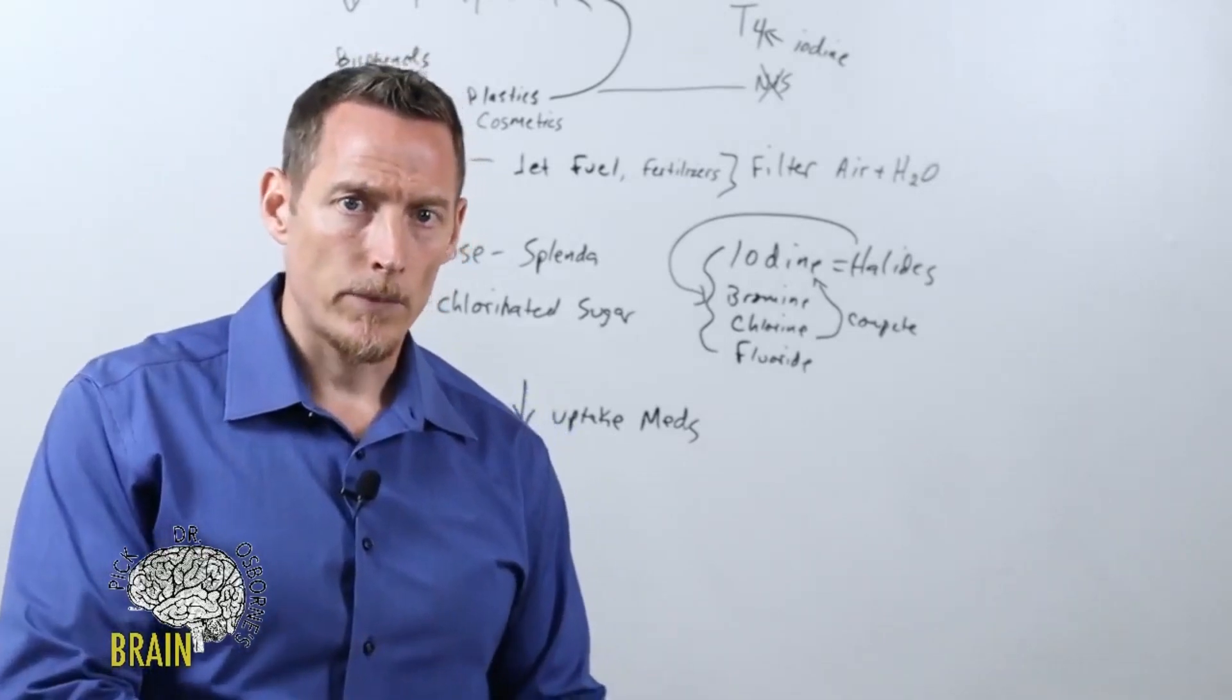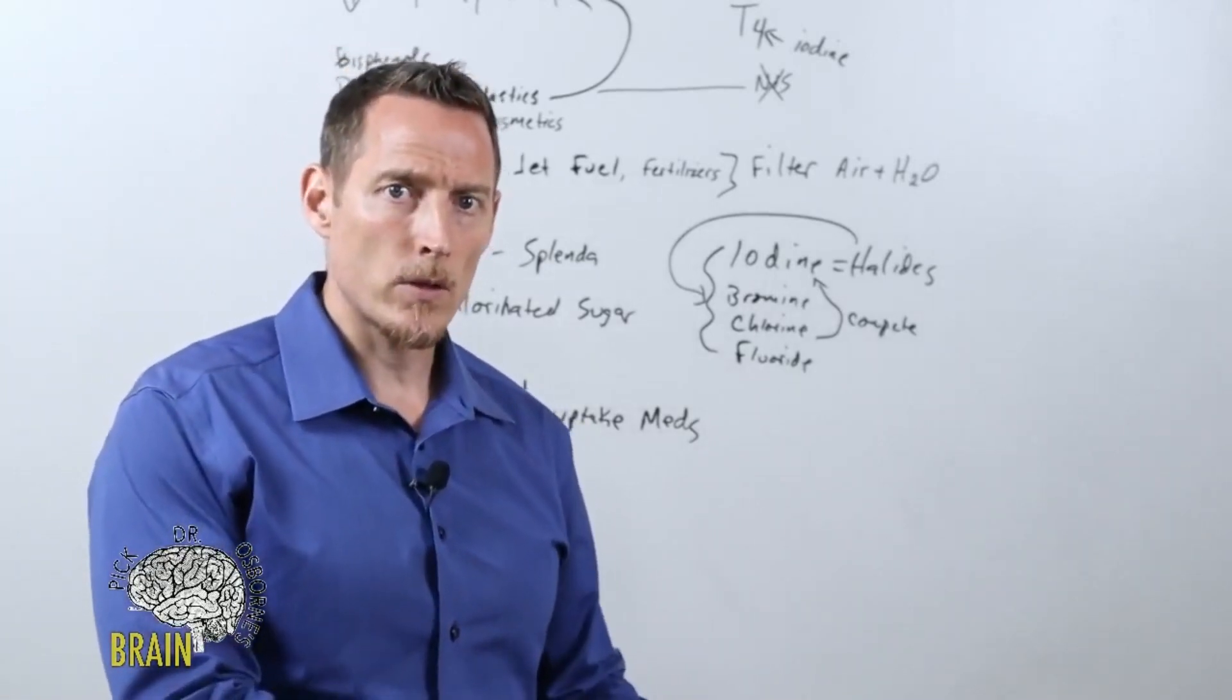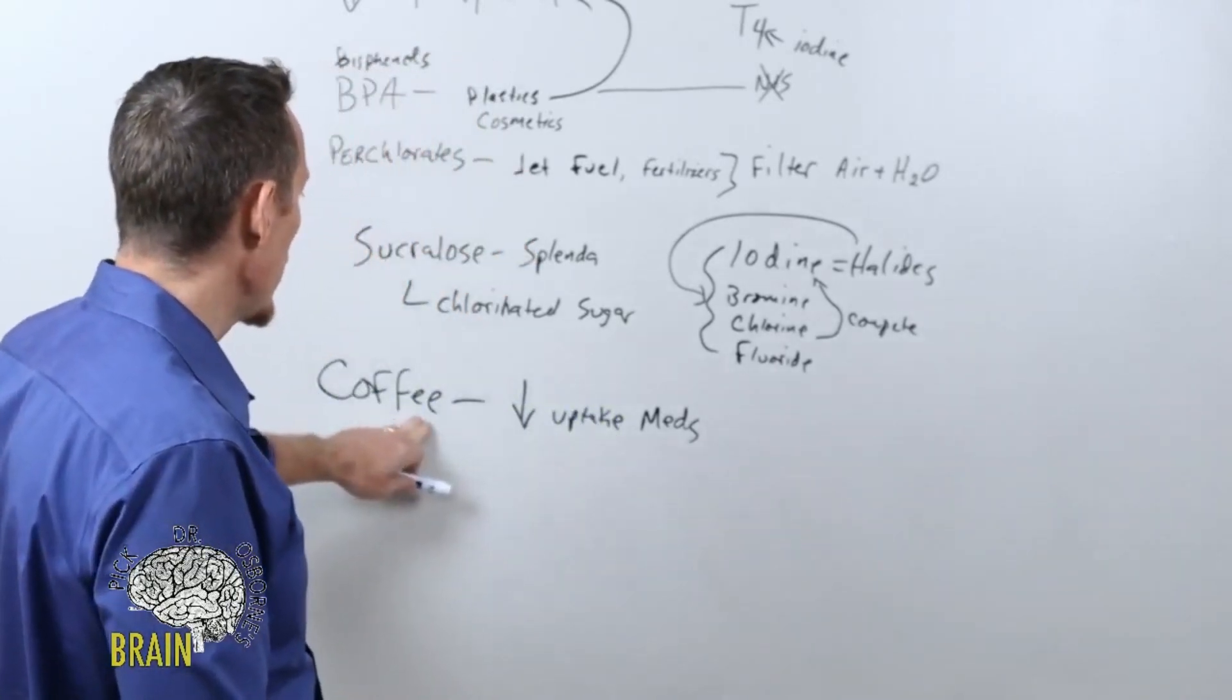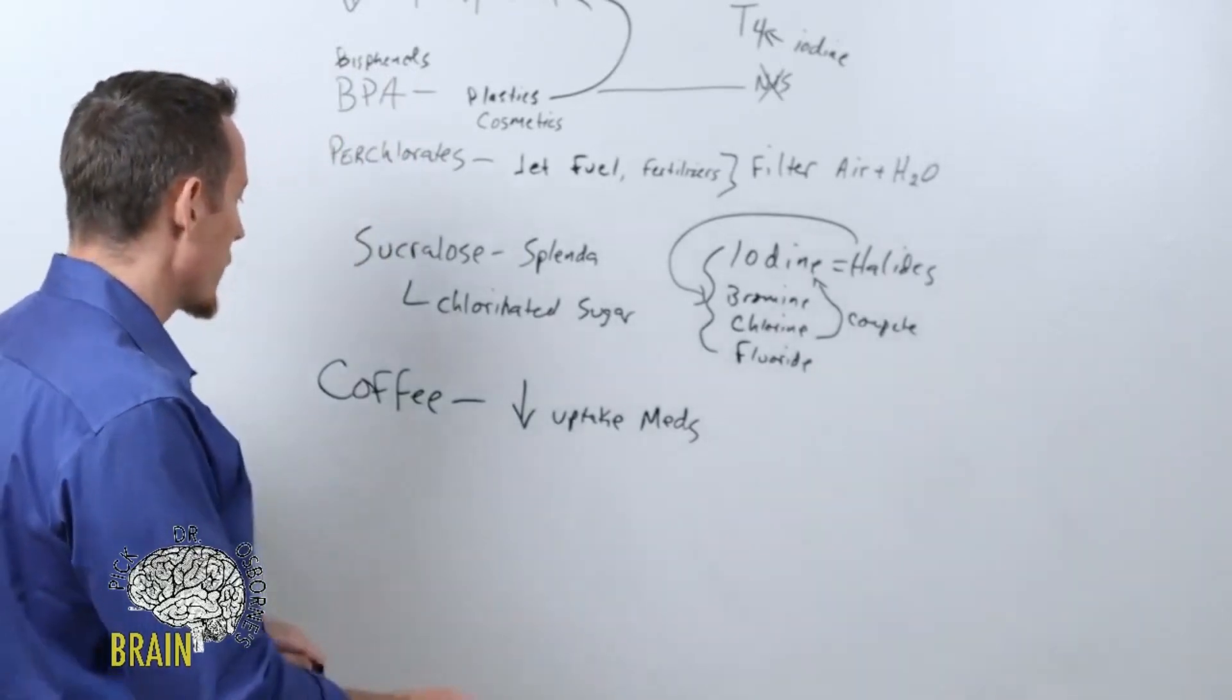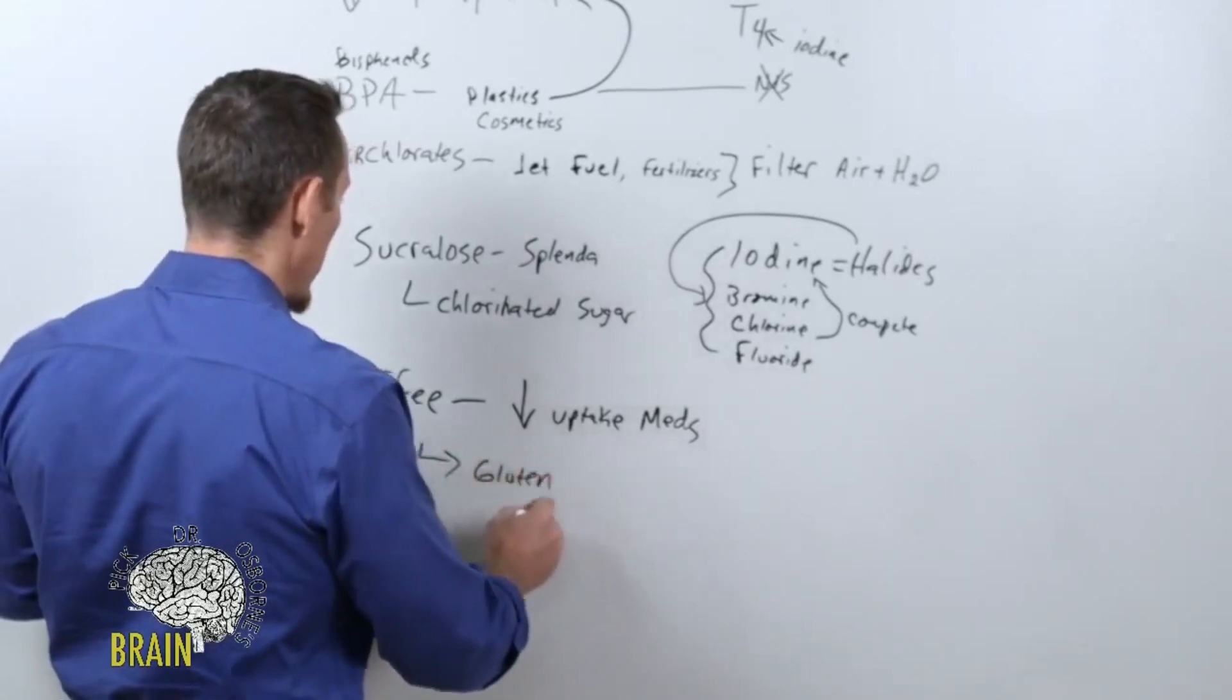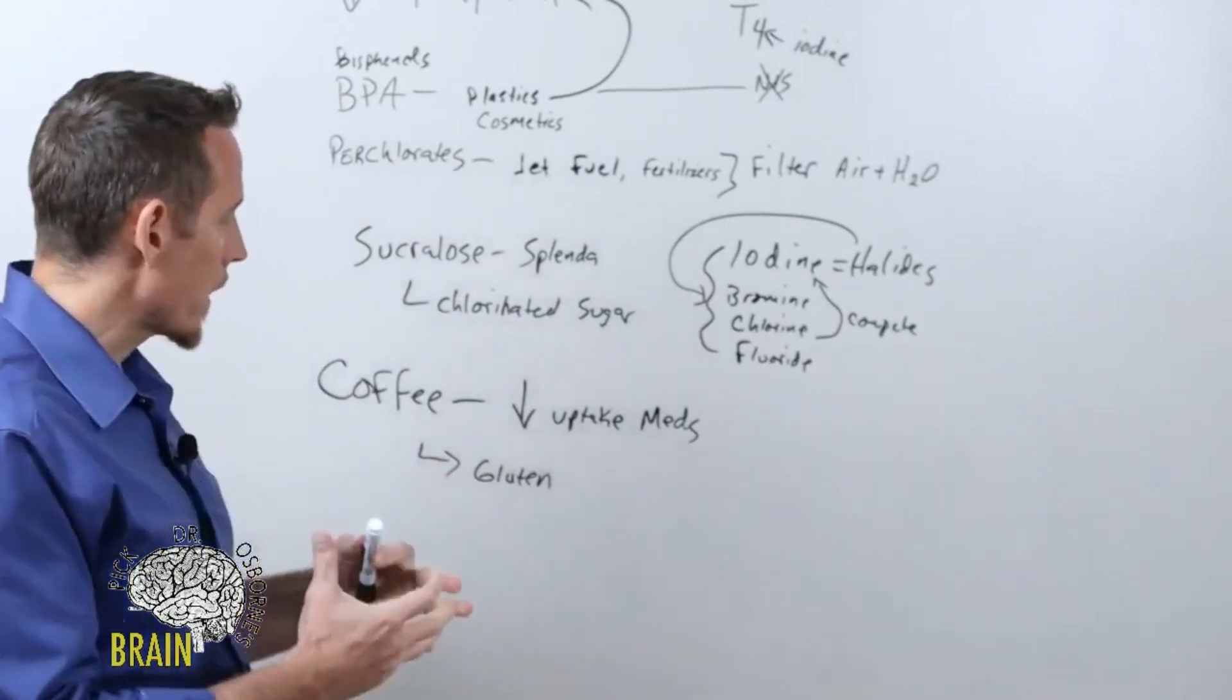Number two, coffee can mimic gluten. In that regard, some people have a problem with coffee because they're gluten sensitive. There's this molecular mimicry or cross-reactivity that can occur where the proteins in coffee can actually look like gluten. For some people, remember that one of the causes of low thyroid is gluten. Let's pull up that slide as well because I want you to see that.